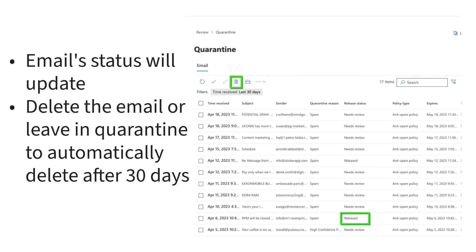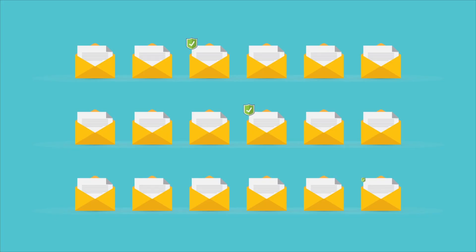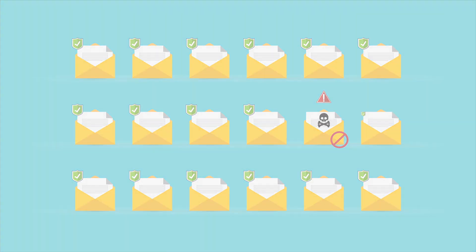When you find emails that are not safe or are simply spam, you can delete them, but you can also leave them in quarantine. You only need to take action on items that need to be delivered to your inbox. Automatic deletion will take care of everything else.